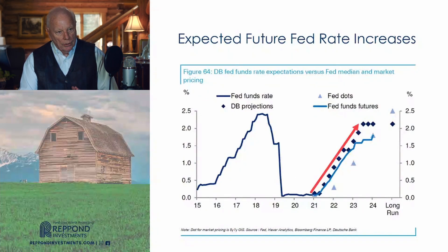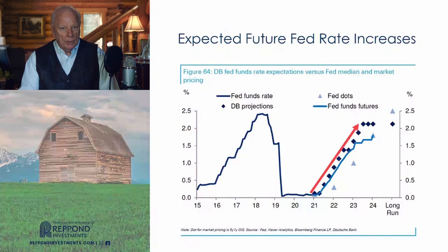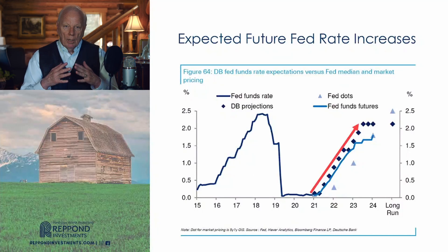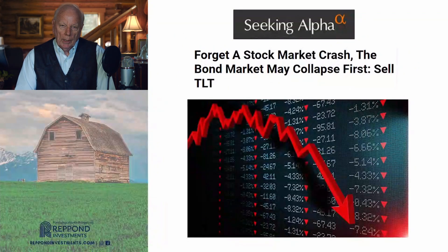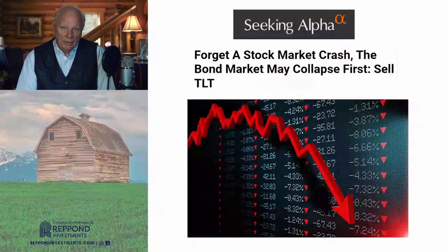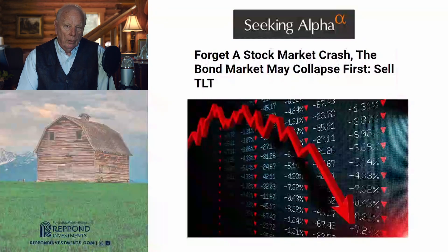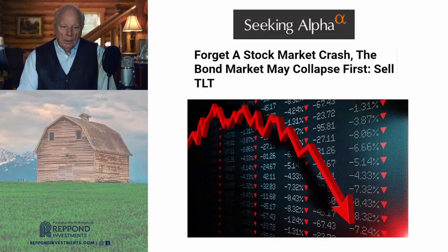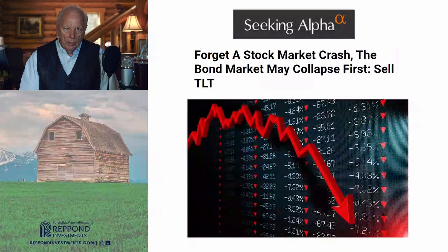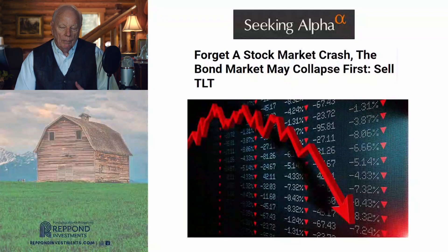That's why I think the articles about the 60/40 portfolio being dead are emerging — bond yields will track interest rate increases, meaning declining bond prices. Bonds haven't been there for the last seven months to protect against equity risk. This article from Seeking Alpha said: 'Forget a stock market crash — the bond market may collapse first. Sell TLT,' the exchange-traded fund for long-term government bonds.